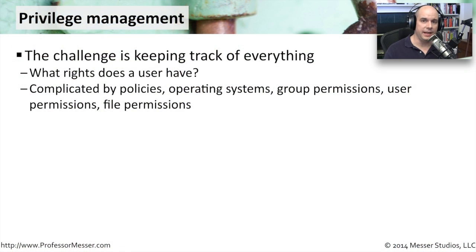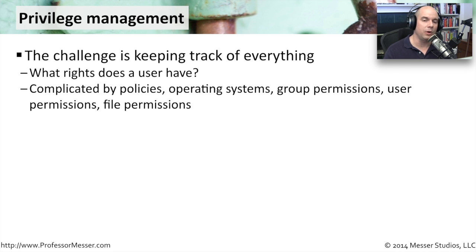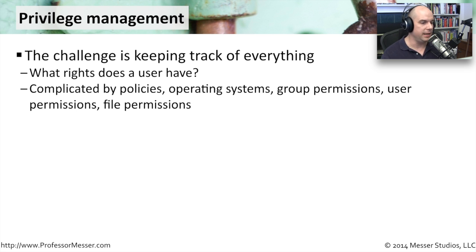In many ways, getting someone authenticated to the network is the easy part. Once they get here, we need to make sure they have the right privileges to access the resources they need to do their job. We have to figure out what rights a user might have — to a folder, to a file — maybe they only have read access to one part of the network, but read and write access to another. And there are all kinds of overlapping policies associated with this.